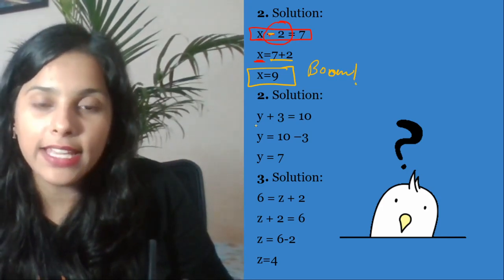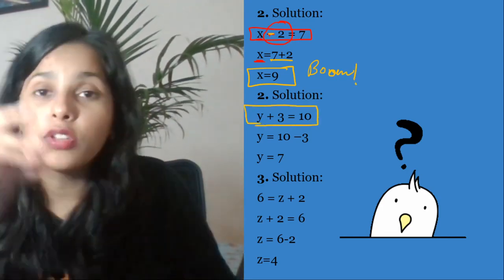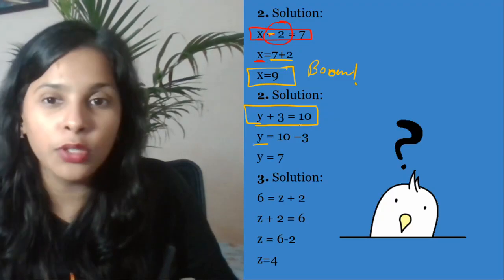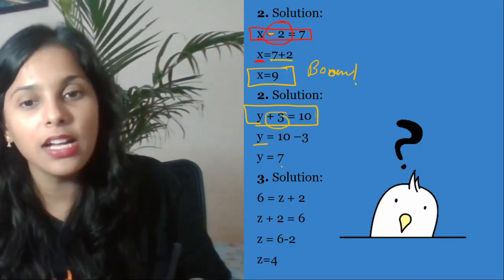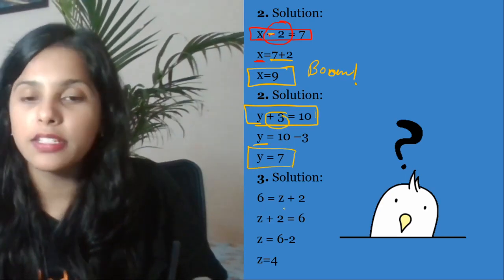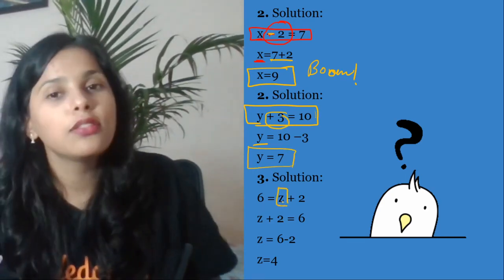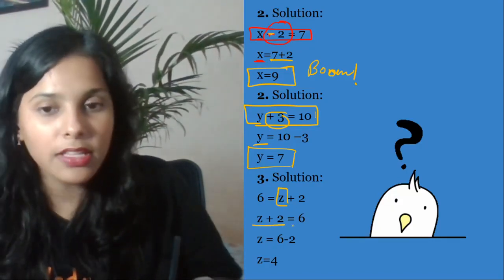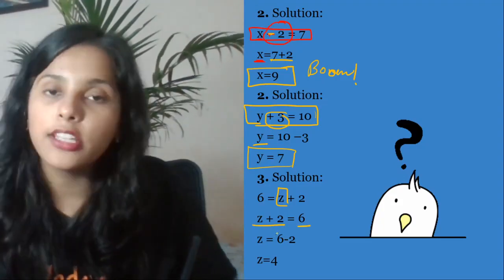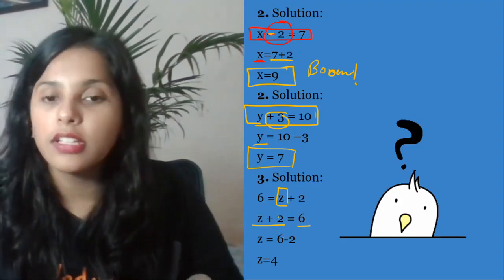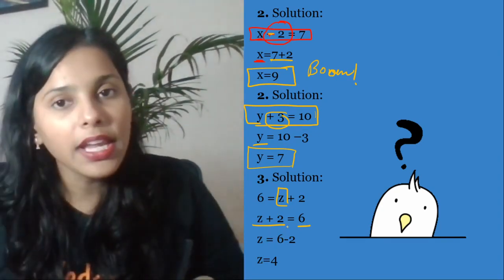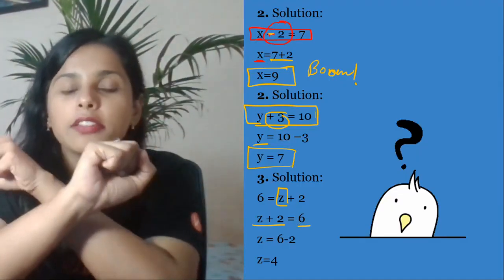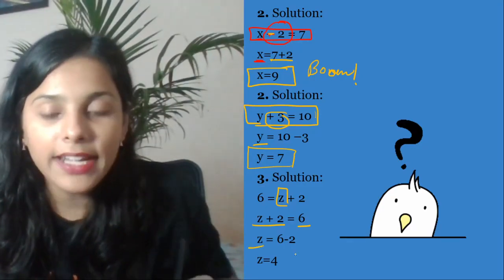Now question number two says y plus 3 is equal to 10. This is fast track revision, so we are going to do it in a super duper fast speed now. So y will be equal to 10 minus 3, because this plus 3 went to the other side. We got y is equal to 7. Third part says you need to find out the value of z. 6 equals z plus 2. You can take this to LHS and that to RHS. So z plus 2 is equal to 6. When you rearrange everything, z ki value aap ki aani chahiye 4, because 6 minus 2 is 4.